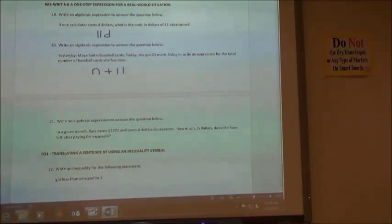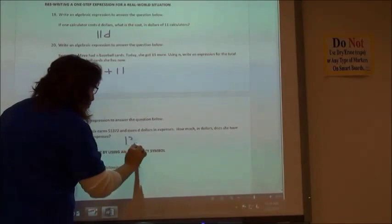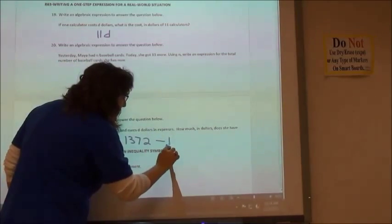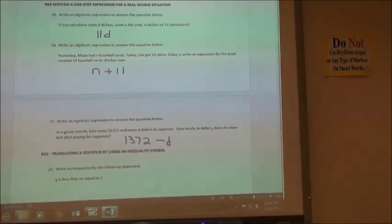Number 21 says, in a given month, Kayla earns $1,372 and owes D dollars in expenses. Maybe she has $100 in expenses. What would I do in order to find my answer? I'm going to subtract, right? So I had 1,372, I have to take away whatever I have in expenses. In this case, it's a D. And so 1,372 minus D would be my answer.